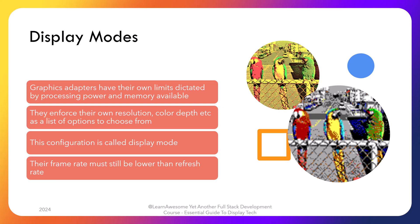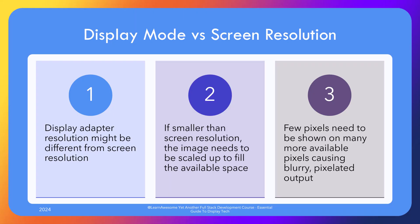Modern operating systems can tune the display adapter mode after detecting the screen capabilities. There is also a bunch of work involved in syncing the graphics card FPS and refresh rate — the frames per second of the graphics adapter must be lower than the refresh rate of the screen, and the frame buffer must be updated before the next paint, otherwise the monitor would show a halfway-written frame on screen, resulting in screen tearing. Similar to issues caused by disparity between refresh rate and frames per second, there's another concept called pixel density.